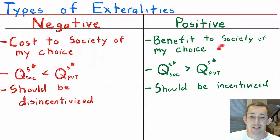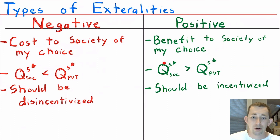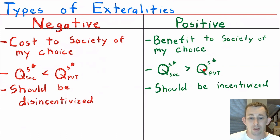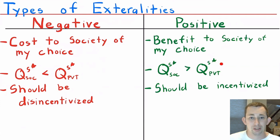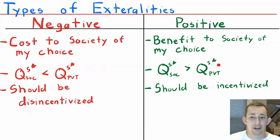With positive externalities, there's a benefit to society of my choice — like bringing my dog to the dog park where neighbors bring their dogs too. The quantity society wants, Q_society*, is greater than the quantity that is privately supplied. If I thought about the fact that my neighbors enjoy me bringing my dog, I might bring my dog to the dog park more. An activity with a positive externality should be incentivized.